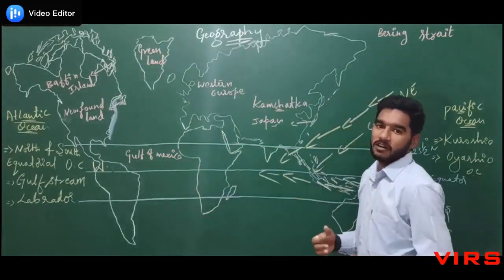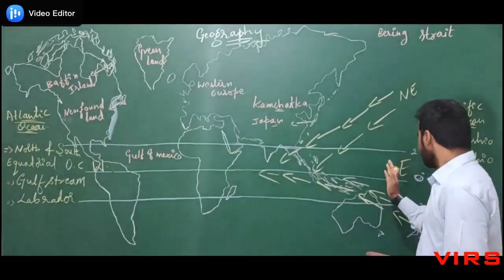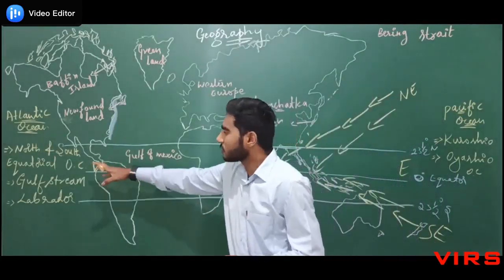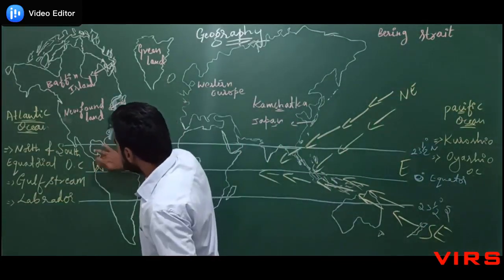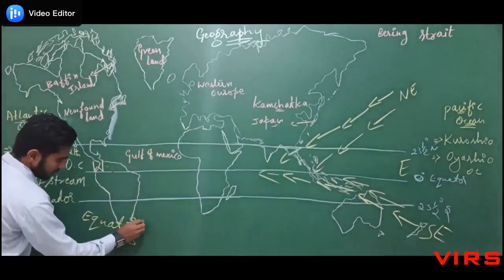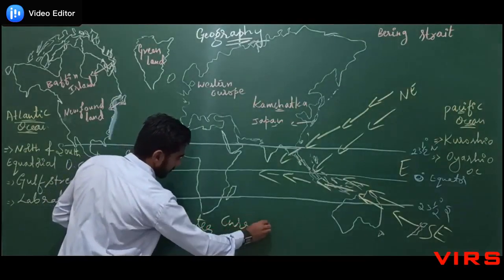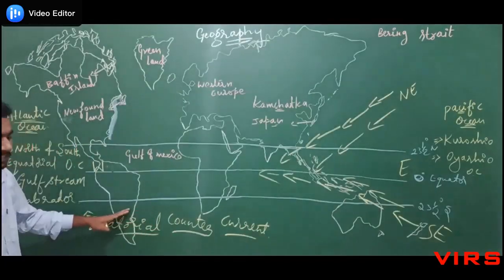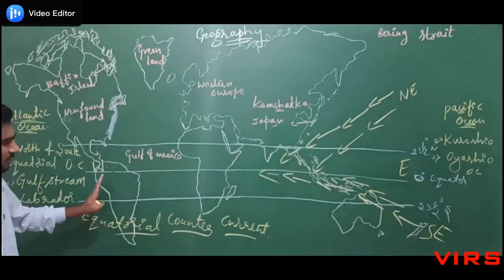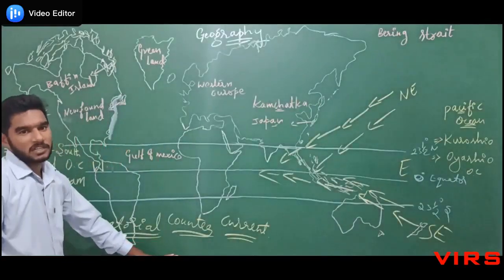When the north and south equatorial ocean currents flow from the eastern direction to the western direction, we can observe a weaker ocean current flowing in the opposite direction — from western direction to eastern direction. This weaker ocean current is called the Equatorial Counter Current.